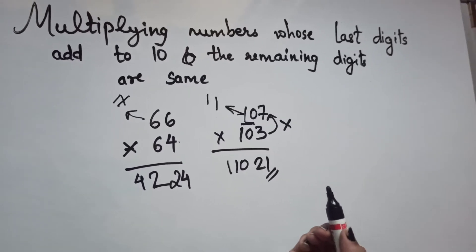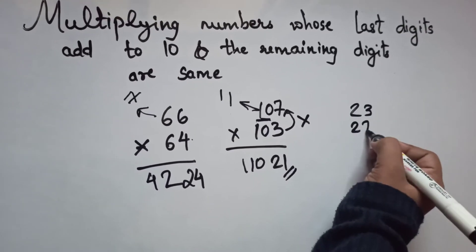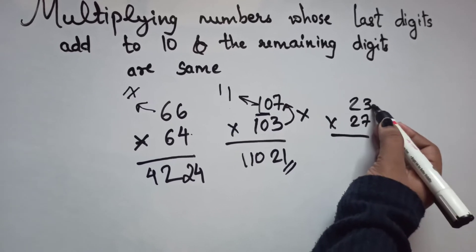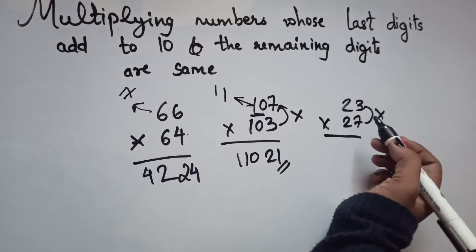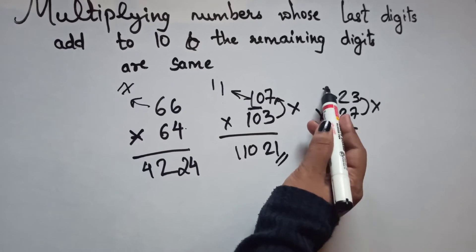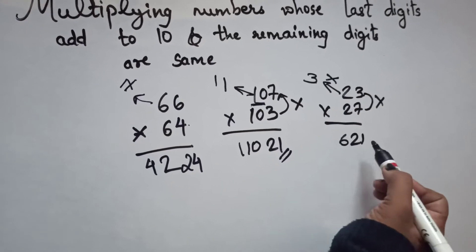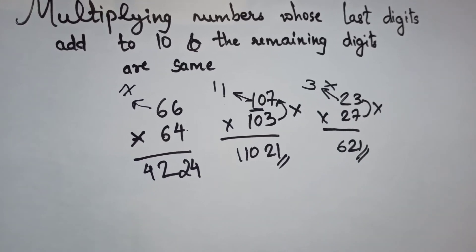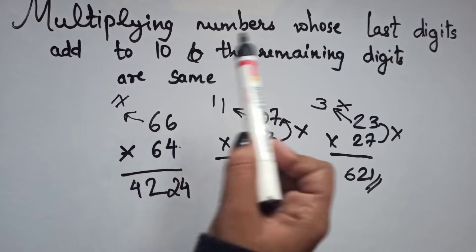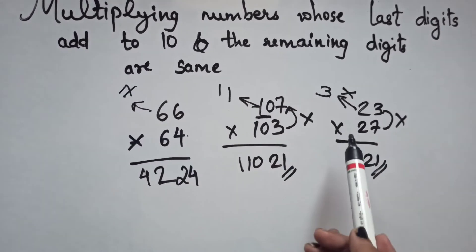For example, 23 × 27: the unit digits multiply as 3 × 7 = 21. The remaining digit is 2, and after 2 comes 3, so 2 × 3 = 6. The answer is 621. Remember: unit digits must add to 10 and the remaining digits must be the same.